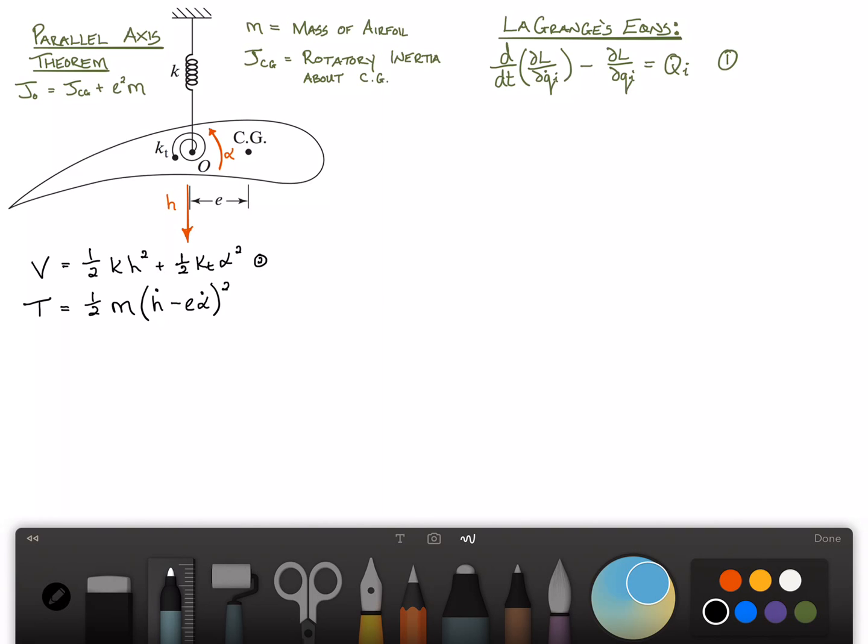So that's a half mv squared of the mass, plus there's rotatory kinetic energy due to the j, the rotatory inertia. And the way we write that is it's one-half times j. Now, which j are we going to use? Is it j about zero or j about the center of gravity? The answer is it's about the center of gravity. j of the center of gravity times alpha dot squared.